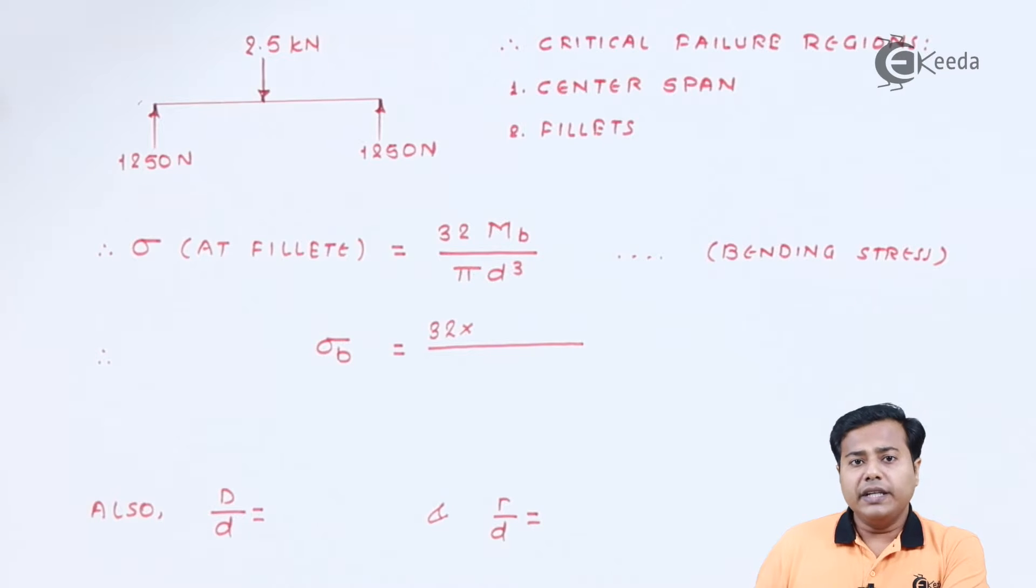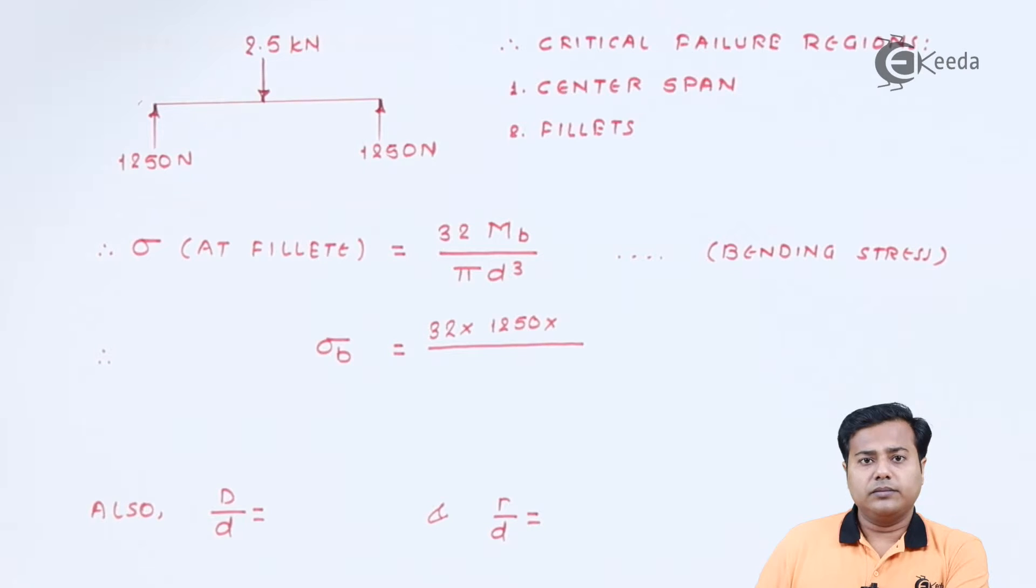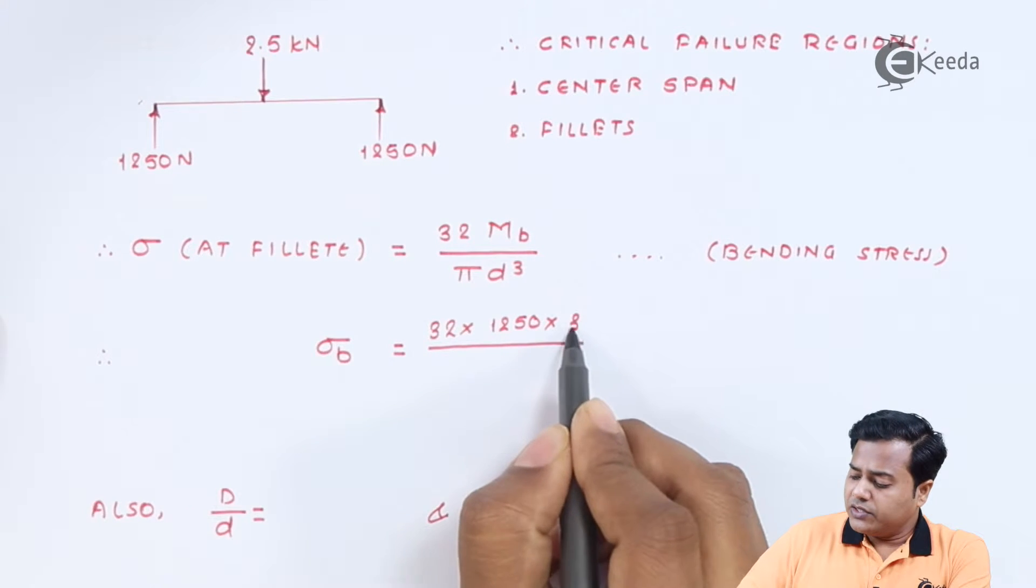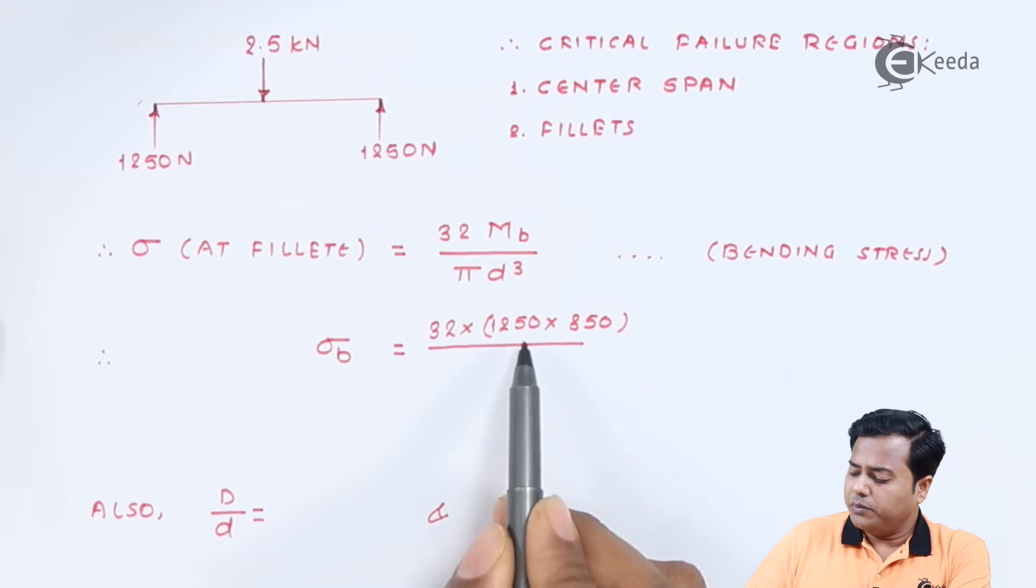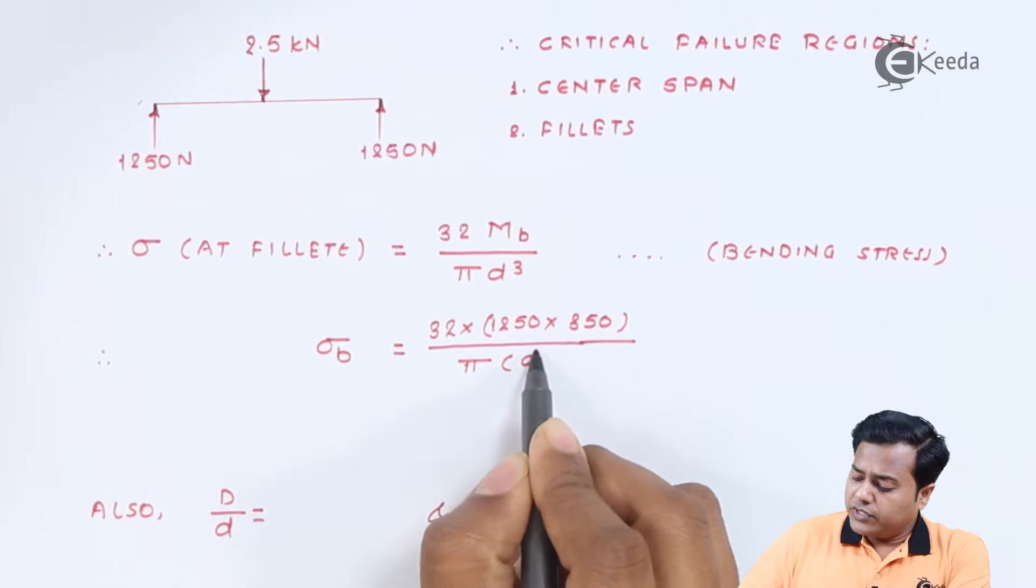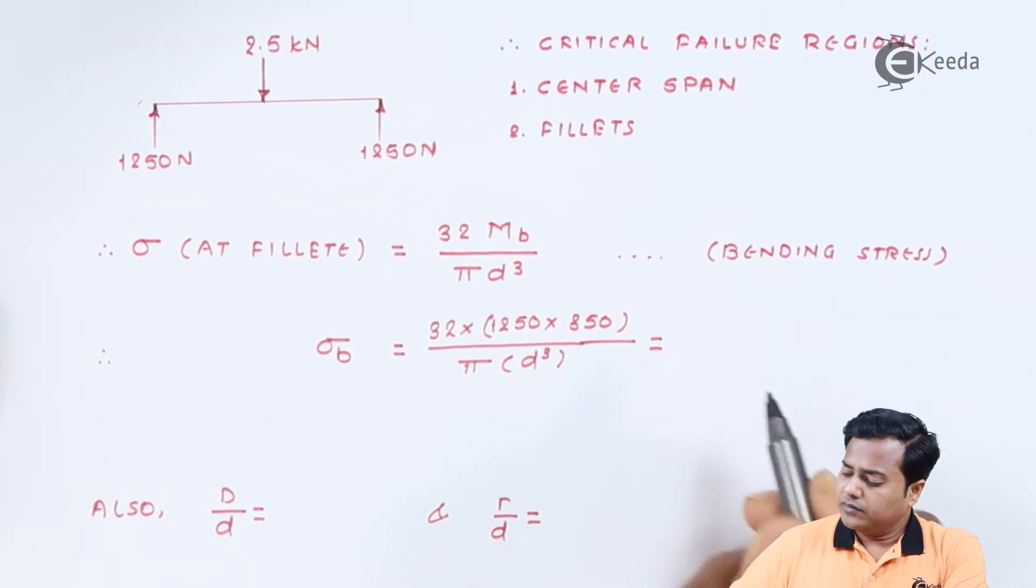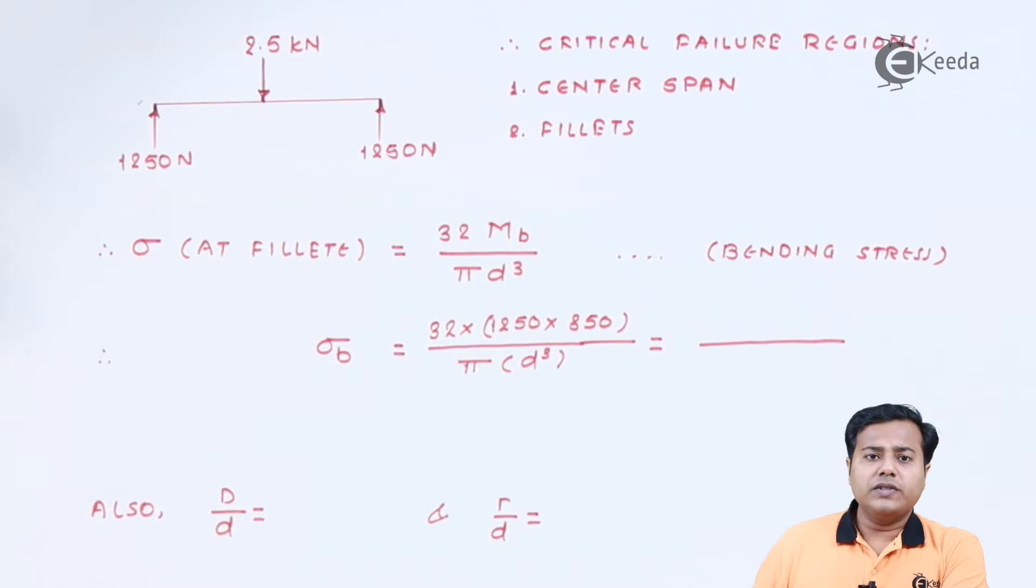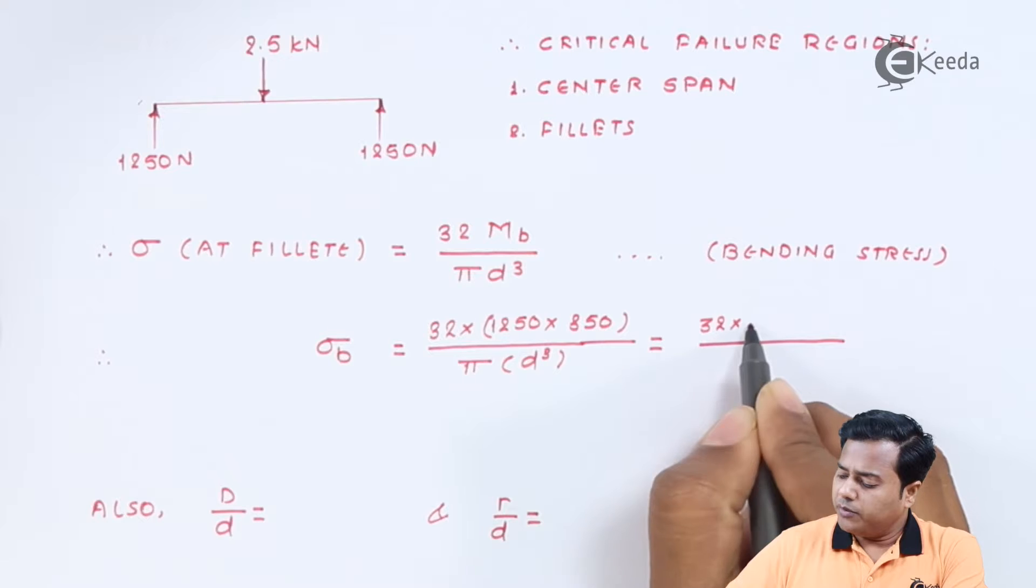If you look at in terms of the reaction, the fillet section is at a distance of 350 from the reaction and that's why bending moment will be this much. The area of cross section basically refers to the same dimension that is diameter d, and therefore as we solve this particular expression we will get certain value. Let us not evaluate it for time being.